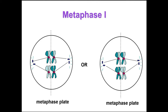In metaphase one, the tetrads line up at the metaphase plate with one chromosome facing each pole. Microtubules from one pole are attached to the kinetochore of one chromosome at each tetrad, while microtubules from the other pole attach to the kinetochore of the other chromosome. During metaphase one, the spindle fibers pull the homologous pairs to the center of the cell, but they remain next to their homolog or partner. They can line up at the center in different orders, which also gives variability in the gene pool.